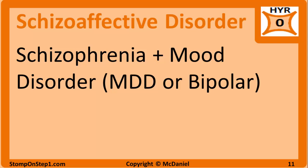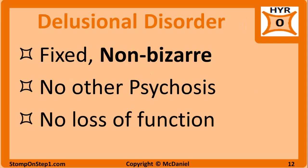Individuals with bipolar disorder will not have psychotic symptoms when they are in a euthymic state or neutral mood. Delusional disorder is characterized by a delusion and the lack of other psychotic symptoms, meaning no hallucinations or thought disorder. These individuals do not have a loss of function and may appear normal most of the time. Unlike the delusions in schizophrenia, the delusions in delusional disorder are usually fixed and non-bizarre — plausible, though not based on reality. A bizarre delusion would be something like aliens abducted me, while a non-bizarre delusion would be something like my neighbor is trying to kill me.